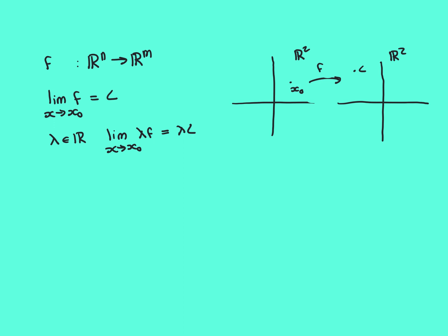Now scalar multiplication — we only need one function f. We still have f from Rn to Rm and assume the limit as x approaches x0 of f exists and equals the limit vector l. We introduce a real number lambda and create the new function lambda times f: for every point in the domain, take what f maps it to and scalar multiply by lambda. The question is: does the limit as x approaches x0 of lambda·f exist, and is it equal to lambda times l? The answer is yes.